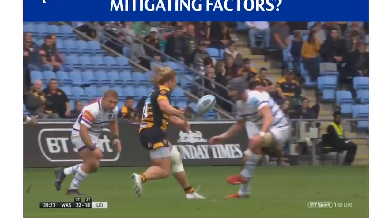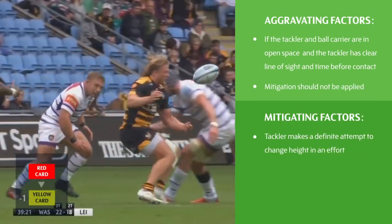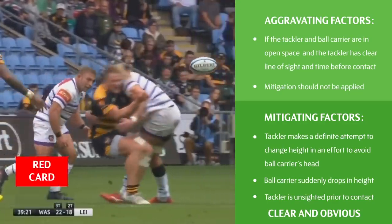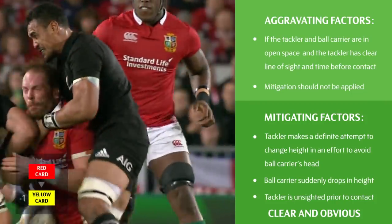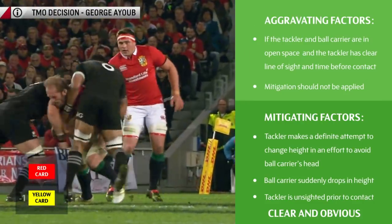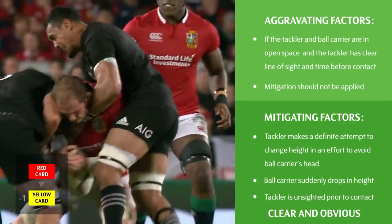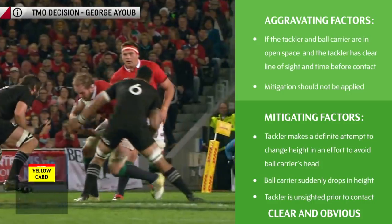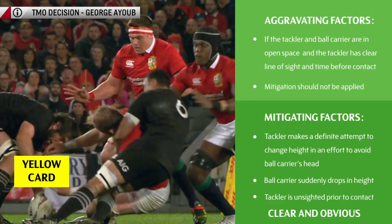Once initial decisions have been made, the match officials must ask whether there are clear and obvious aggravating or mitigating factors. In this example, there are no clear or obvious mitigating factors, so the initial decision of a red card remains. In another example, the ball carrier has ducked and is running in a low, crouched position immediately before contact to the head occurs. The tackler may therefore be considered to be aiming low enough to avoid the head, unless the ball carrier dropped suddenly in height. The officials may find this sufficient mitigation to reduce the sanction from a red card to a yellow card — the final decision after applying mitigation is a yellow card.